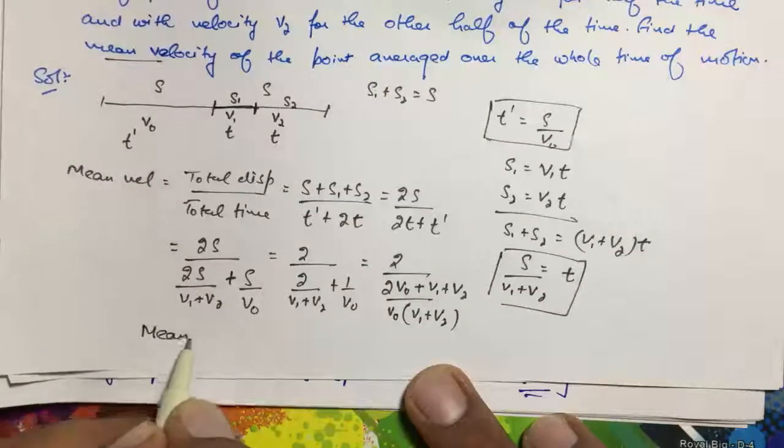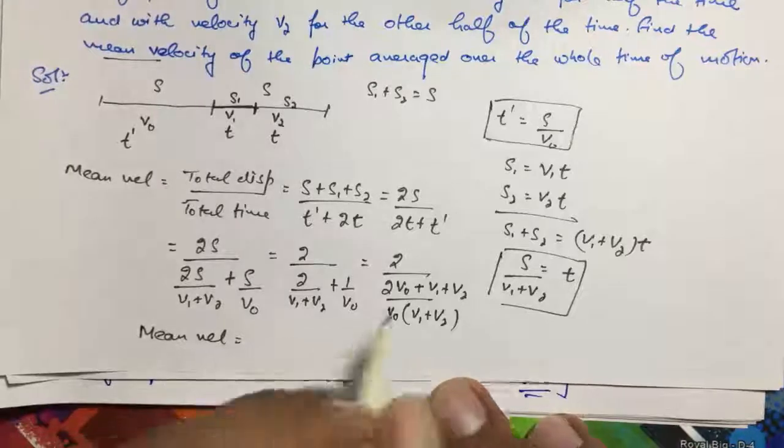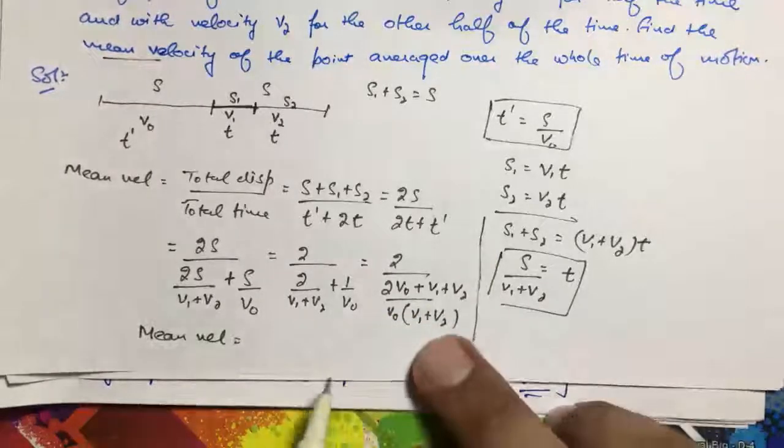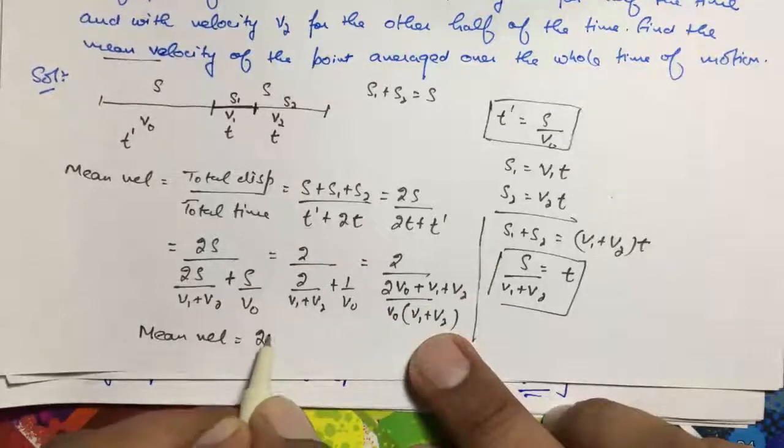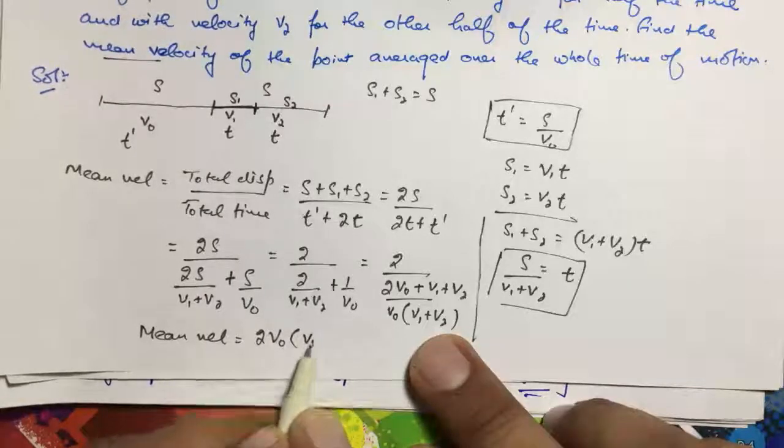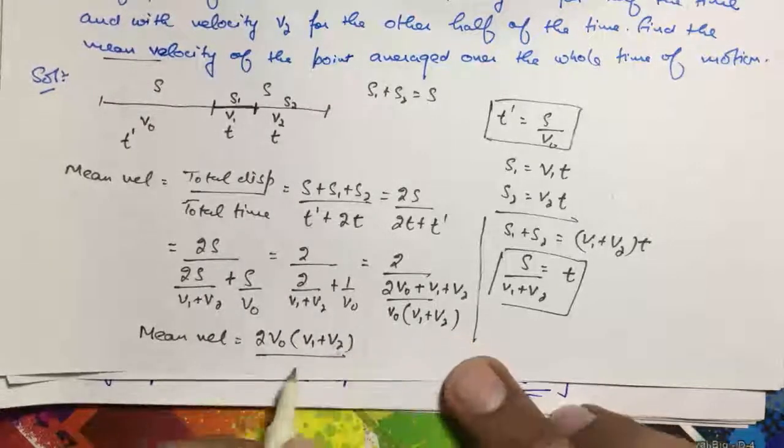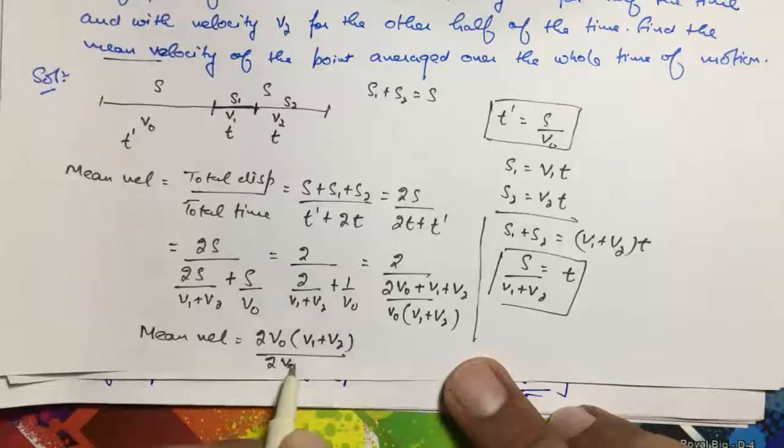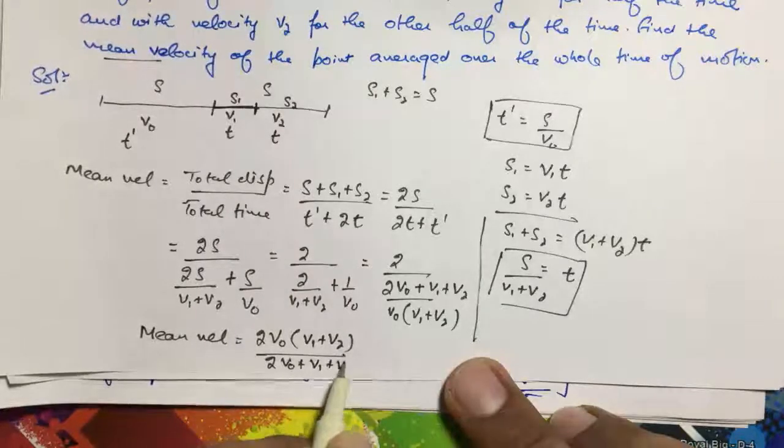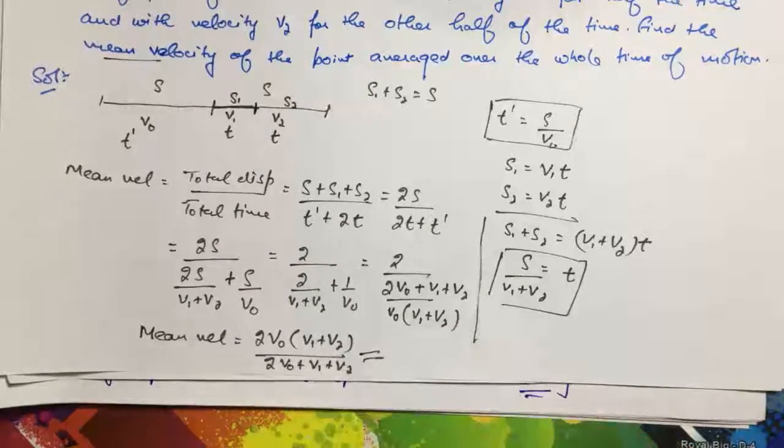If we solve this by taking the reciprocal, mean velocity equals 2V₀(V₁ plus V₂) upon [2V₀ plus (V₁ plus V₂)]. That's my answer. Thank you.